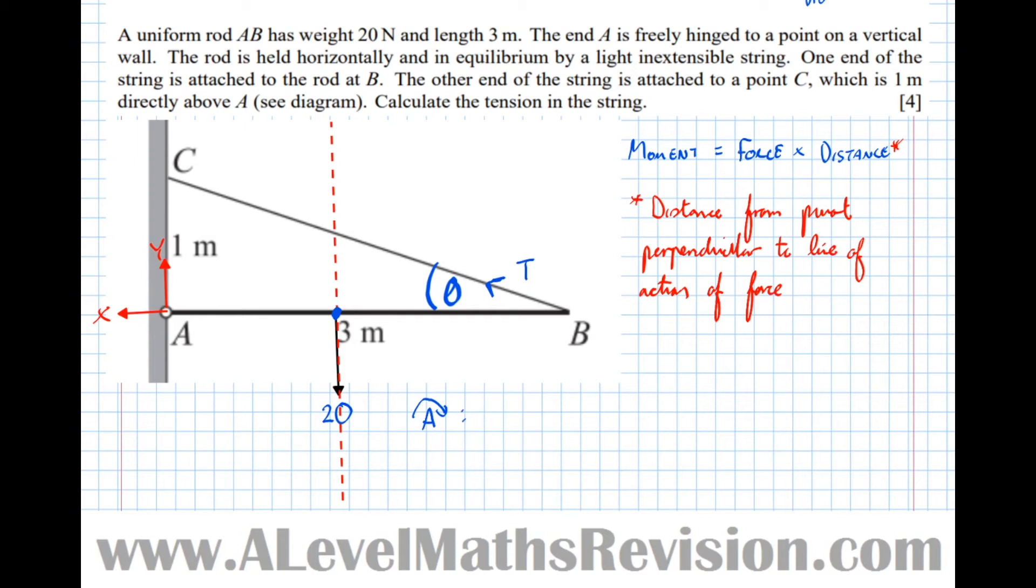So I've got the force, which is 20, times the perpendicular distance from the pivot, which is 1.5. Then we've got this tension force here, which is turning it anticlockwise. So take,